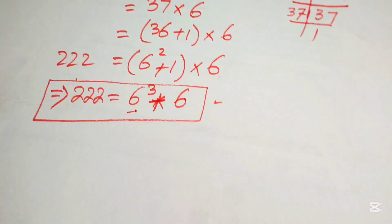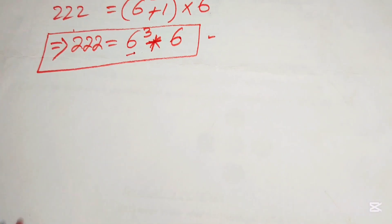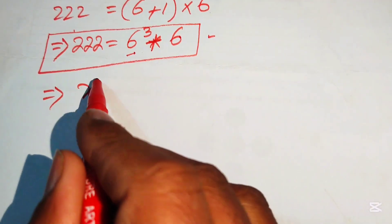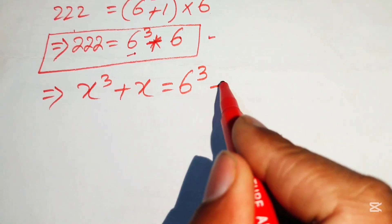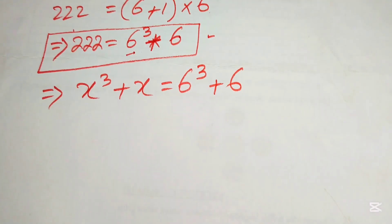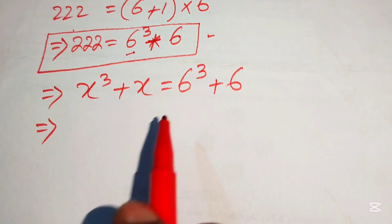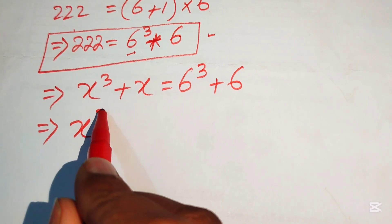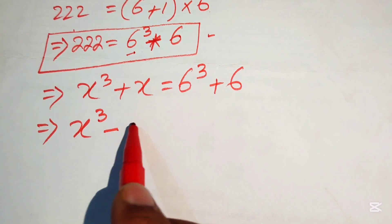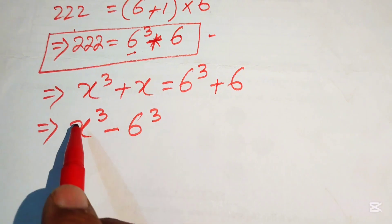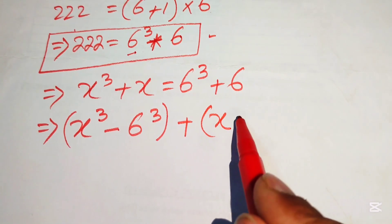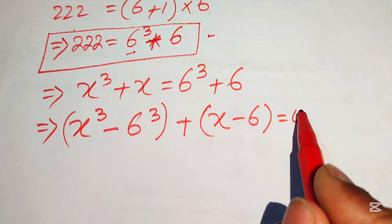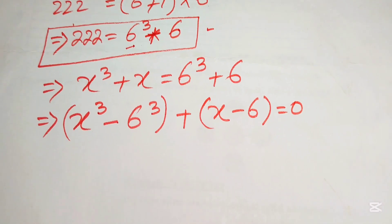We replace 222 with 6³ + 6, so our equation becomes x³ + x = 6³ + 6. Moving all terms to the left-hand side, we get x³ minus 6³ plus x minus 6 equals 0, pairing the cubic terms and the linear terms.